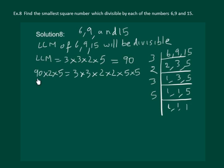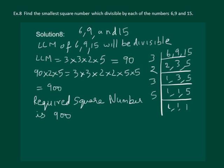Now whatever number we get here will be a perfect square. 90 × 2 × 5 gives us 900. And we know that 900 is the smallest square number which is divisible by 6, 9, and 15. The required square number is 900.